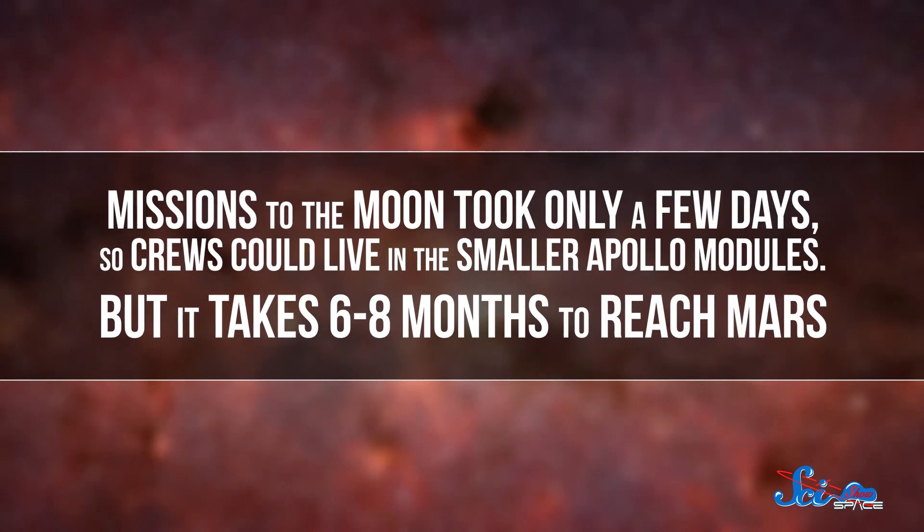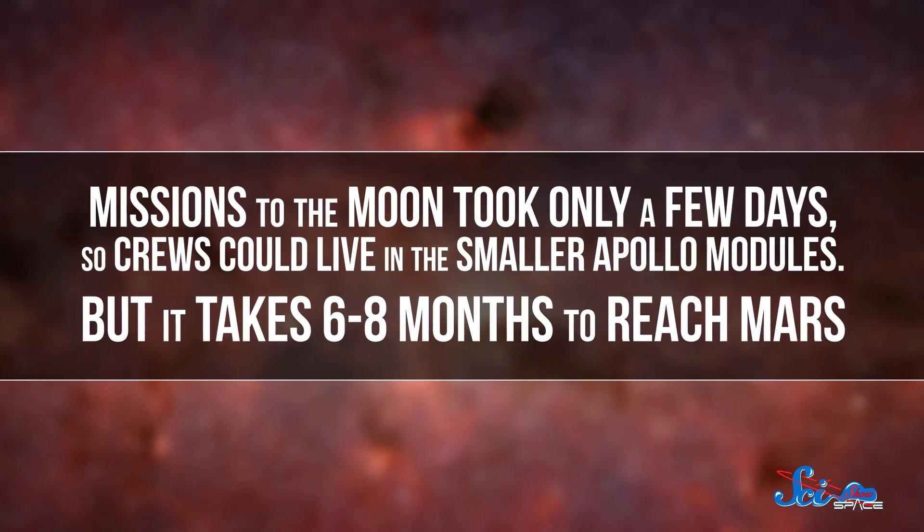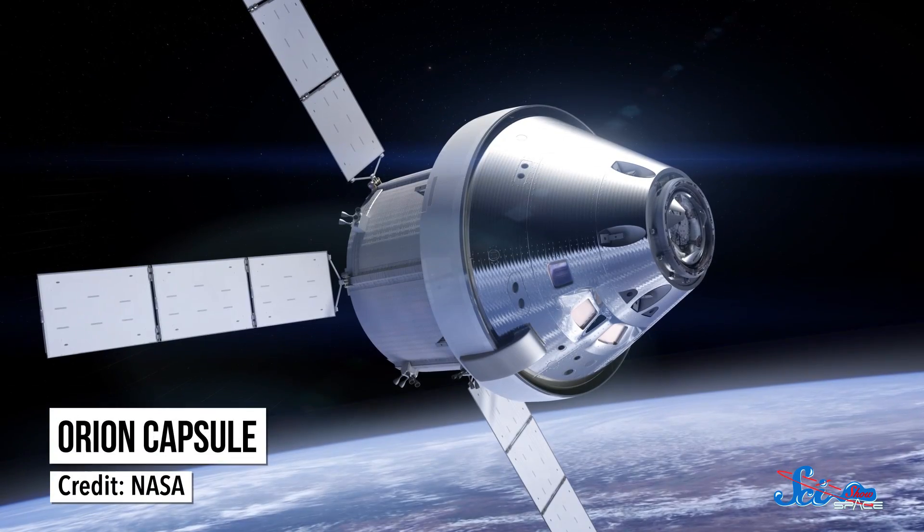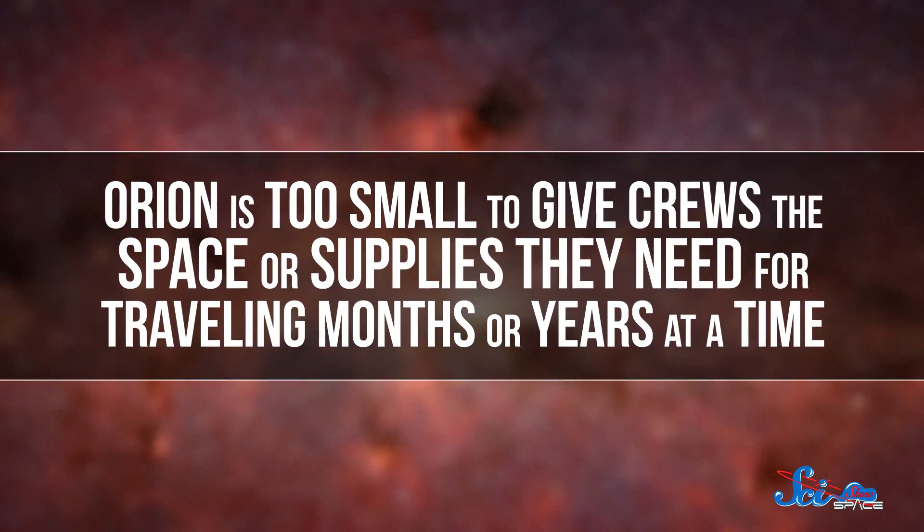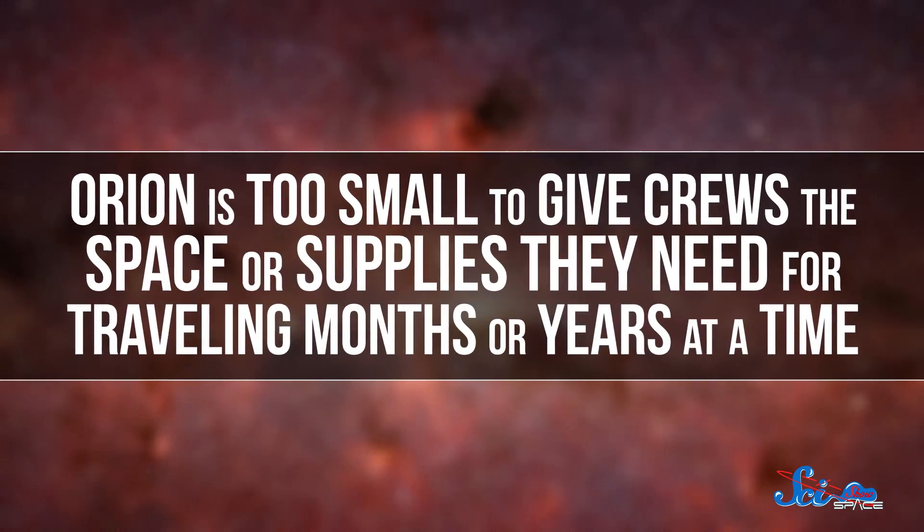Missions to the Moon only took a few days, so crews could live in the smaller Apollo modules. But it takes six to eight months to reach Mars. Astronauts will blast off in the Orion capsule, which is currently under development. But Orion is too small to give the crews the space or supplies they need for traveling months or years at a time.